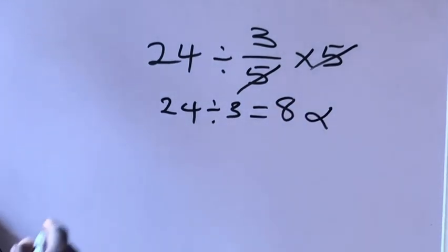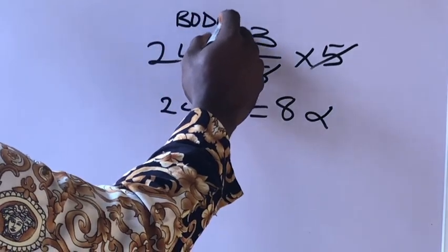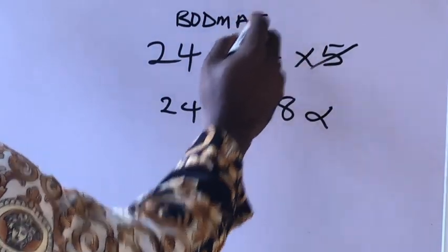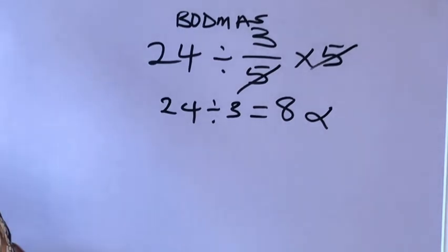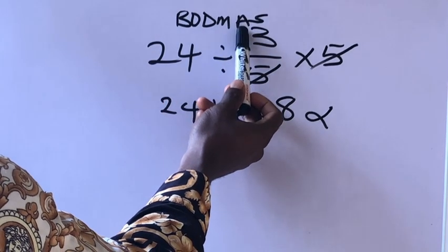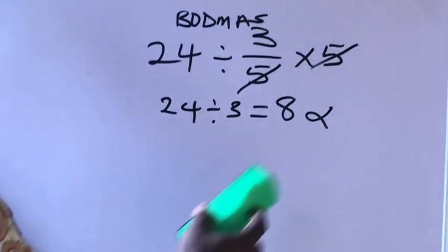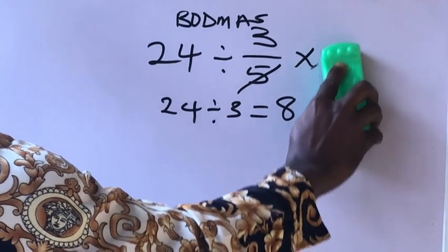According to order of operation, we have to first of all solve for brackets, division and multiplication, then addition before subtraction. So we are going to solve this again.